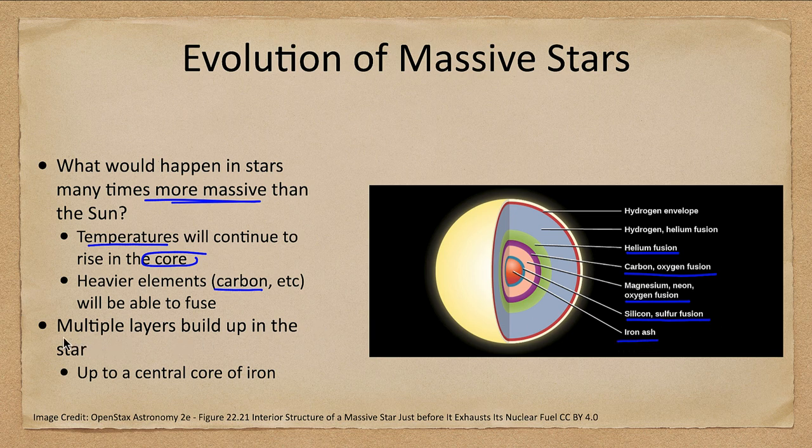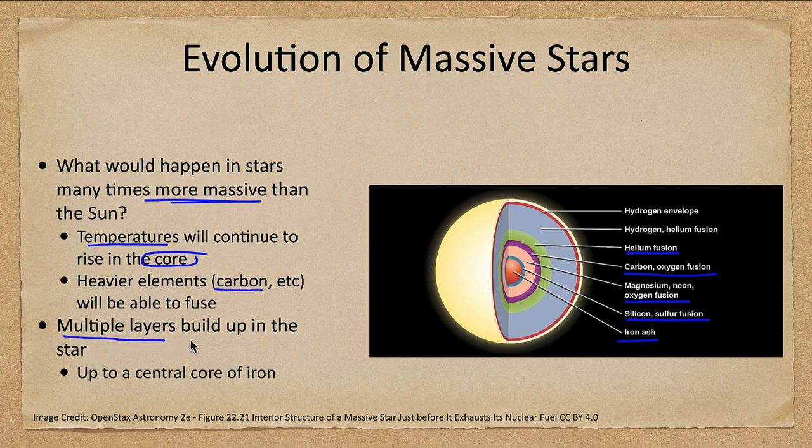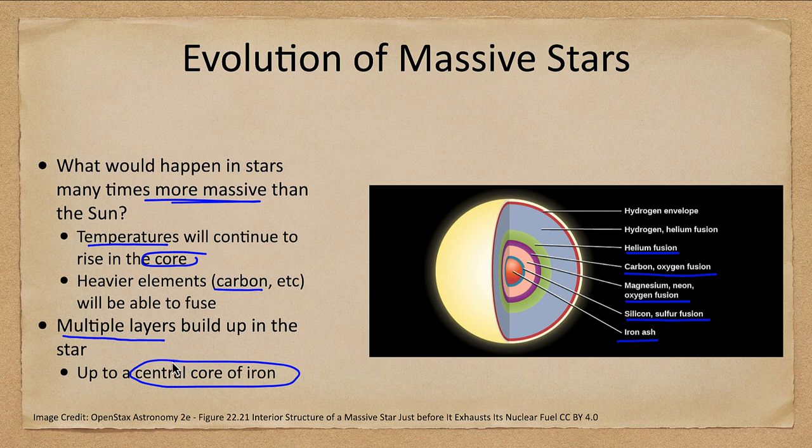So multiple layers continue to build up in the star until you reach iron. Once you get iron in the core we're going to find out that this is the end of what the star is able to do.